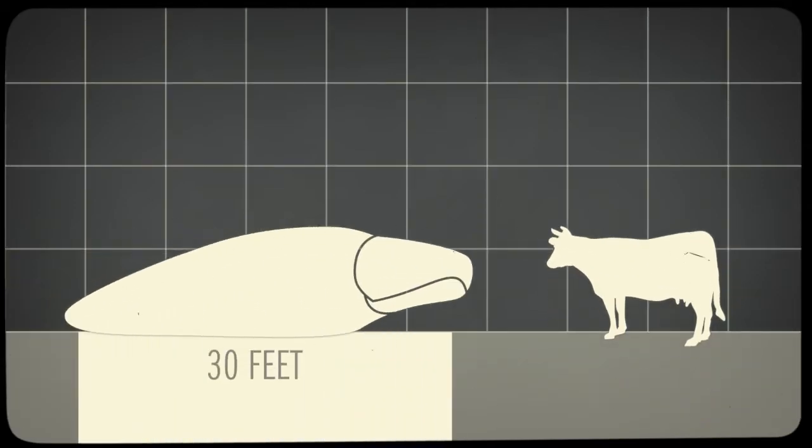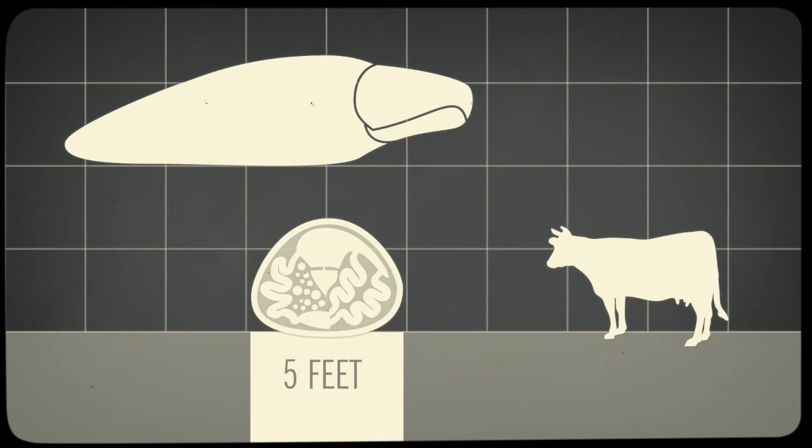Full-grown graboids can reach a length of up to 30 feet and approximately 5 feet in diameter at their widest area behind the beak.